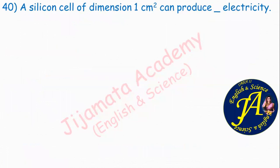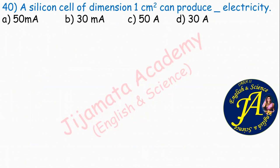A silicon cell of dimension 1 centimeter square can produce dash electricity. Options are 50 milliampere, 30 milliampere, 50 ampere, 30 ampere. There is a slight controversy in this question — the textbook states 1 centimeter square produces 30 milliampere of electricity. Option B: 30 milliampere is the correct answer.